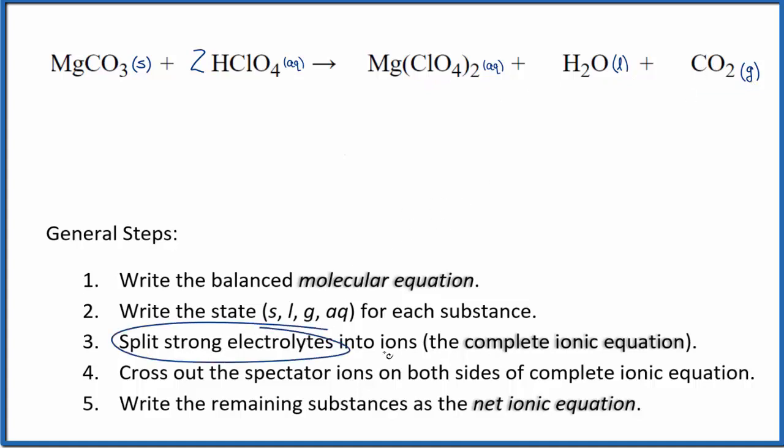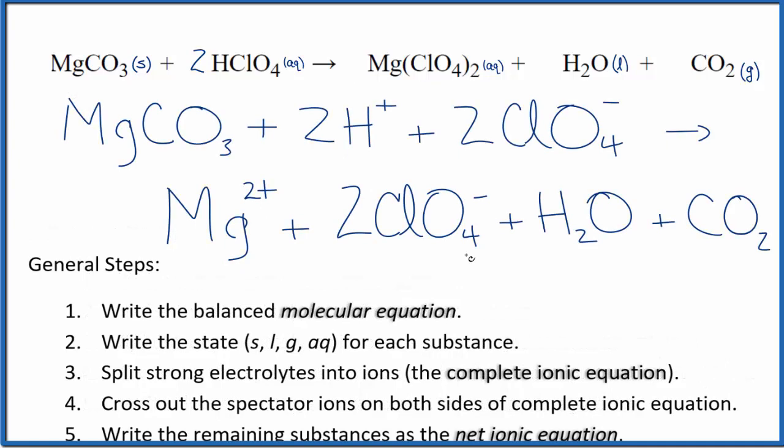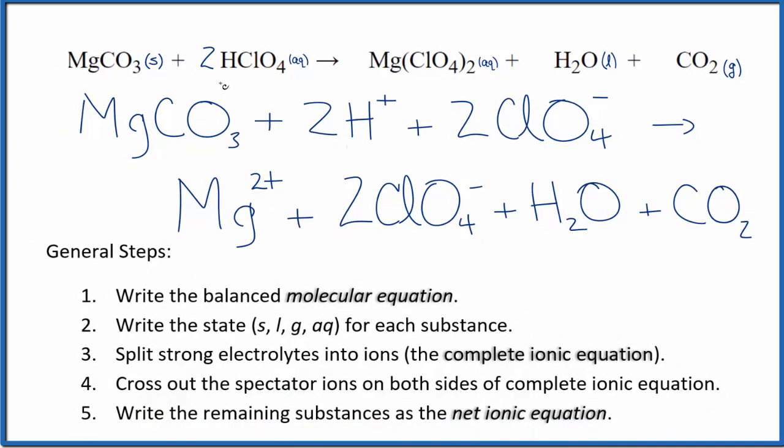Now we can split the strong electrolytes into ions for the complete ionic equation, and that looks like this. So this is the complete ionic equation. Note that we don't split solids apart when we have these net ionic equations, so we kept the solid together there, and we don't split liquids or gases apart either in net ionic equations, so all of these substances we keep together.